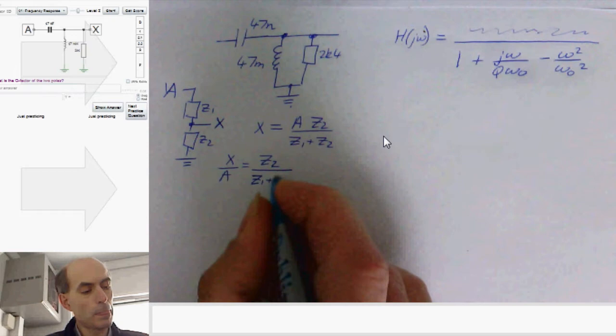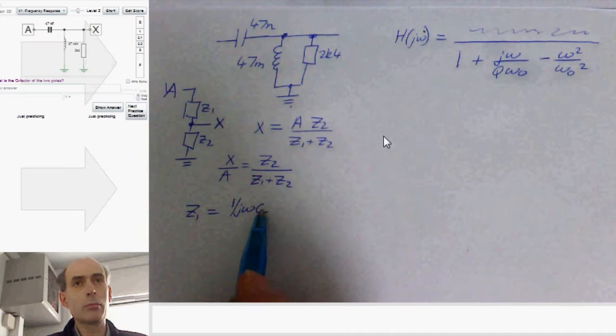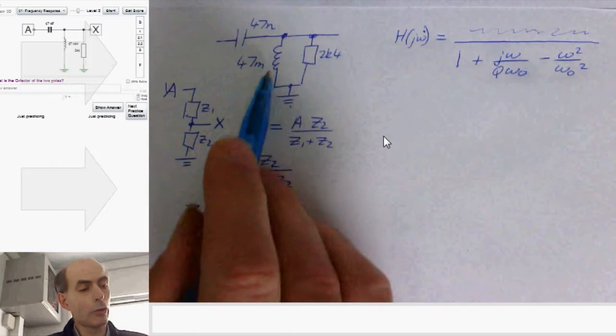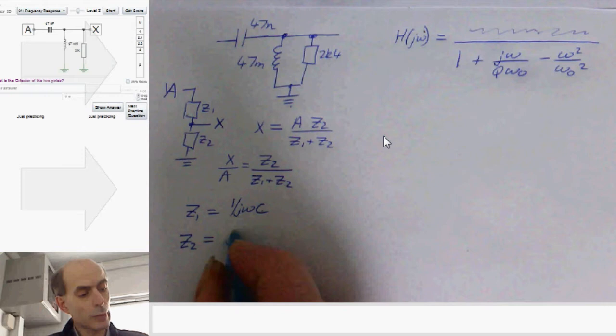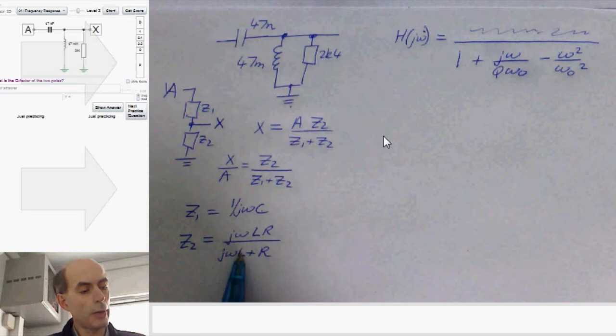Here, our z1 is that capacitor, and I'll just write it as 1 over jωC, without putting the values in because it saves a bit of ink. z2 is the parallel combination of an inductor and a resistor. So that would be jωLR over jωL plus R, standard form of putting two components in parallel.